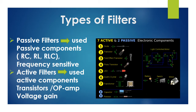We can design filter circuits in two ways: passive filters and active filters. Passive components include resistors, capacitors, and inductors. These are all passive components — they don't generate electricity or voltage, and do not apply signals. Filters designed using these components are called passive filters.